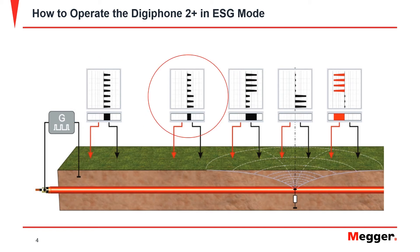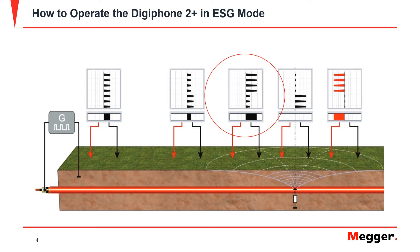At the halfway point between the generator and the fault position on the cable, the signal strength is at a minimum. When we move nearer to the fault, the signal strength increases again. The maximum signal strength is measured when one of the earth spikes is directly above the fault.